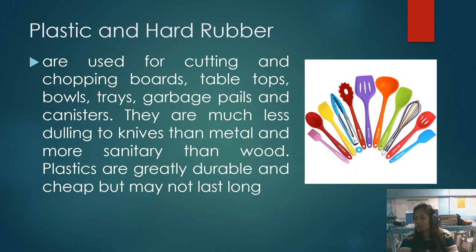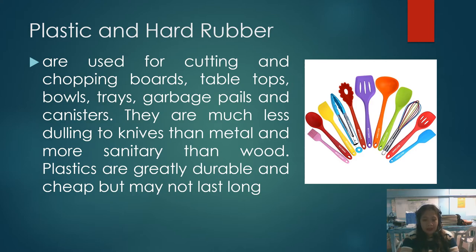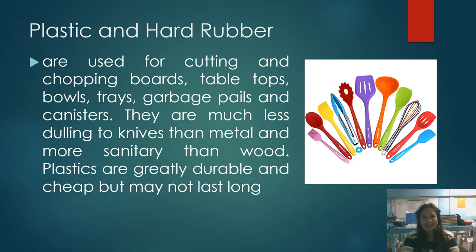Plastic and hard rubber are used for cutting and chopping boards, tabletops, bowls, trays, garbage pails, and canisters. They are much less dulling to knives than metal and more sanitary than wood. Plastics are generally durable and cheap but may not last long. They are lightweight and easy to use, and come in many different colors.